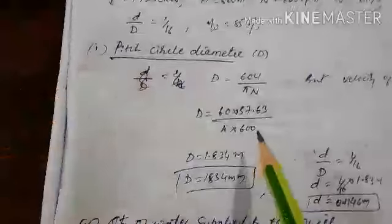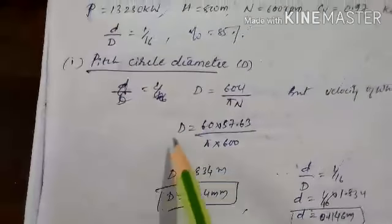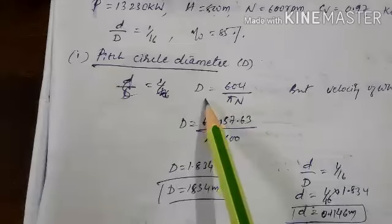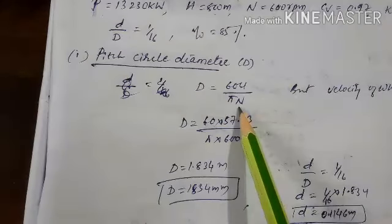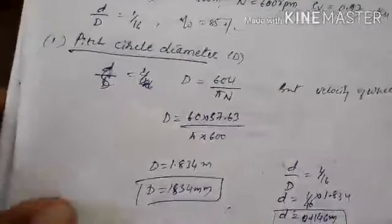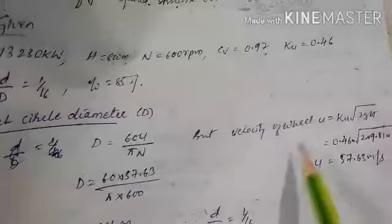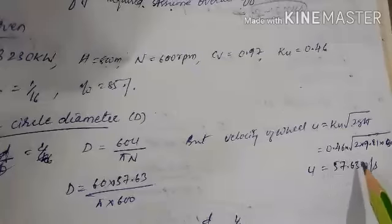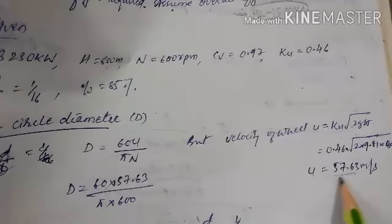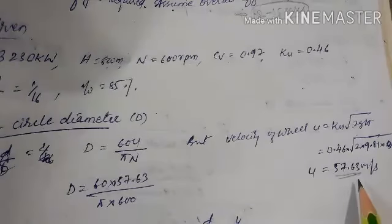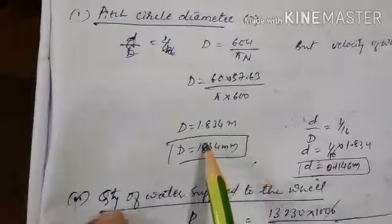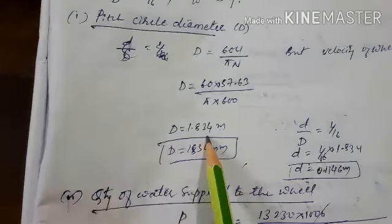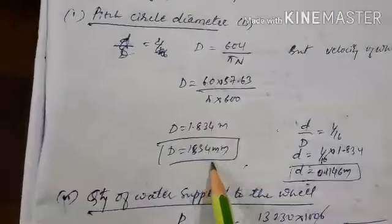Calculate the pitch circle diameter: D = 60u / (π·N). Wheel velocity u = Ku × √(2gH). Substituting Ku and H gives u = 57.63 meter per second. Then diameter D = 1.834 meter or 1834 millimeter.